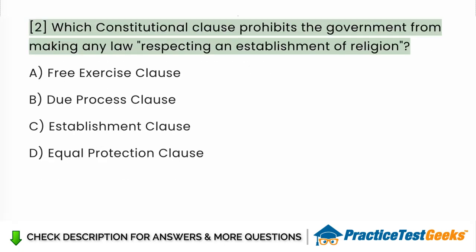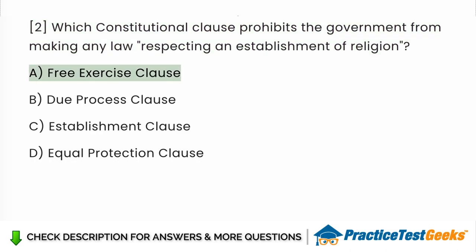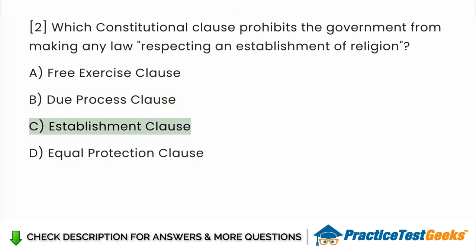Which constitutional clause prohibits the government from making any law respecting an establishment of religion? a. Free exercise clause. b. Due process clause. c. Establishment clause. d. Equal protection clause.